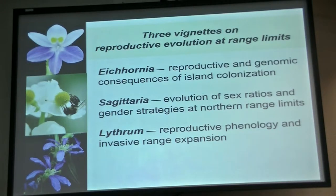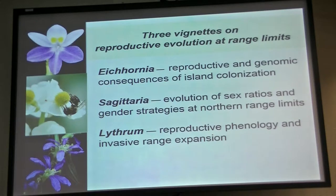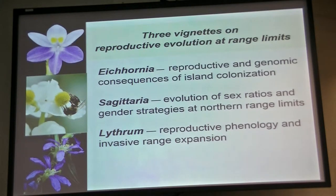I'm going to talk about Eichhornia, which has been a system I've worked on ever since I got my PhD thesis at Berkeley in the 70s. The reason that species is particularly interesting is that there are multiple independent transitions to selfing that have very important biogeographical consequences. I want to talk essentially about processes operating in island populations at the edge of the range.